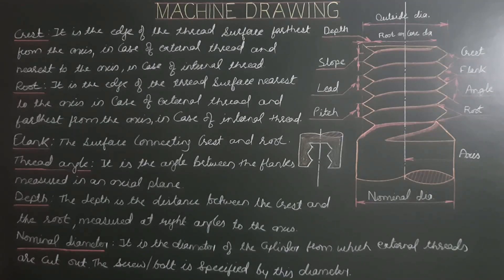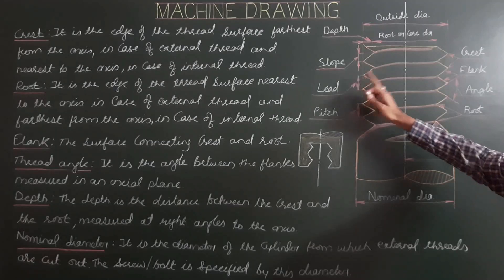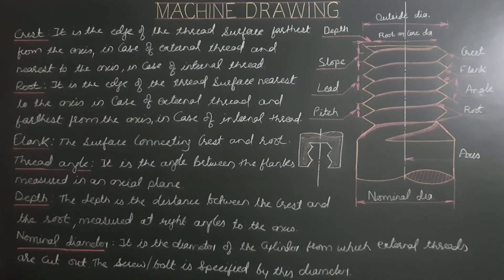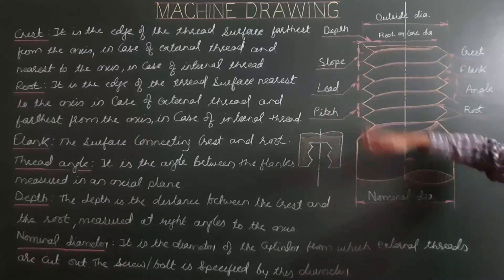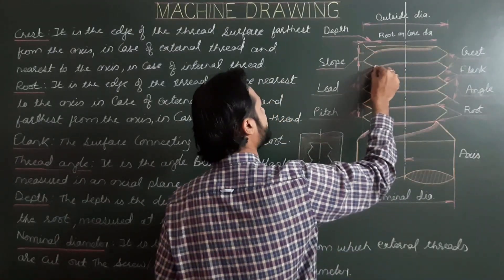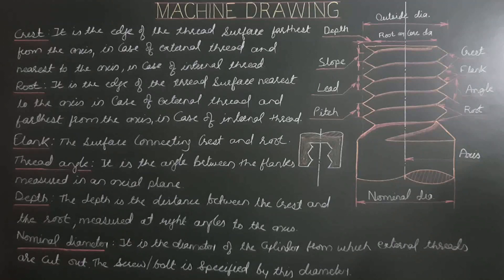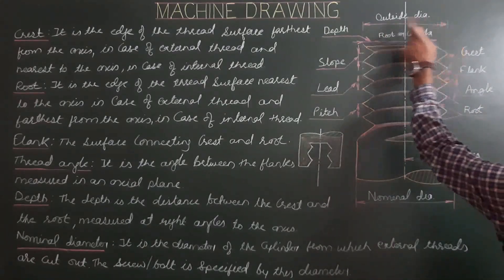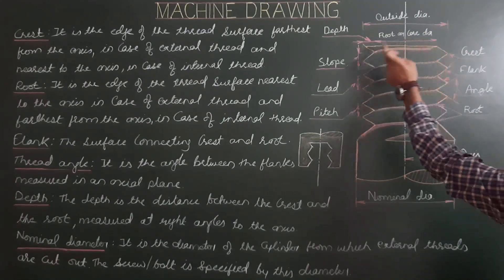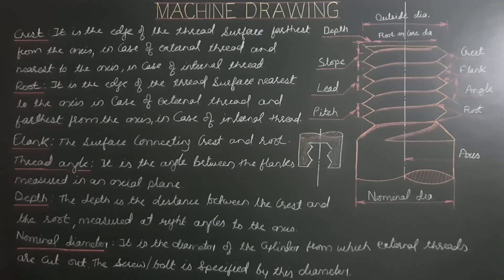Depth is the distance between the crest and the root, measured at right angles to the axis. If you draw a line perpendicular to the axis, the distance from root to crest is the depth. Depth is also equal to (outside diameter minus root or core diameter) divided by 2.